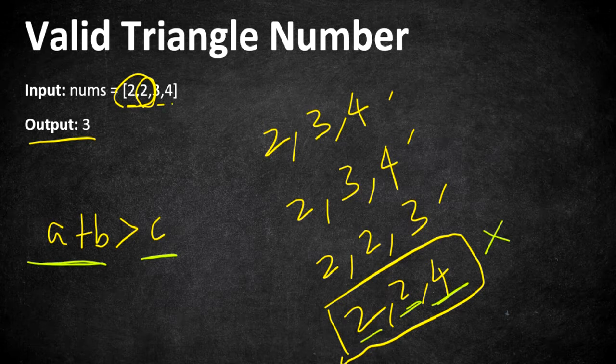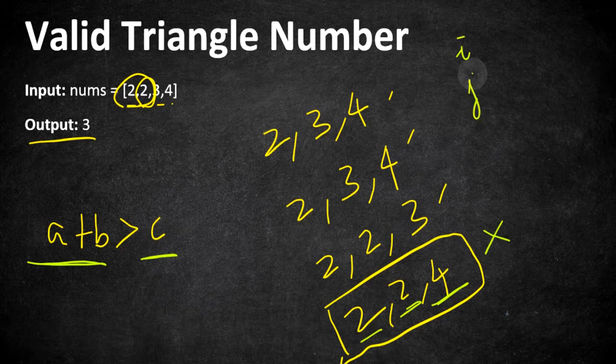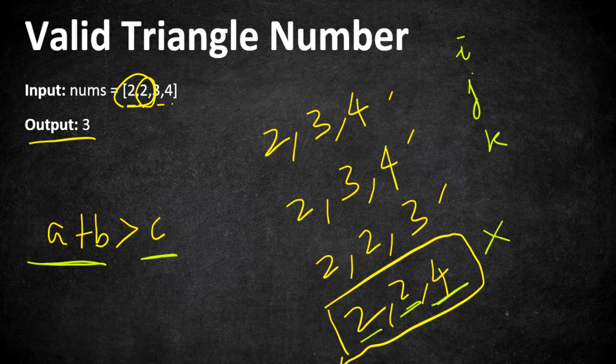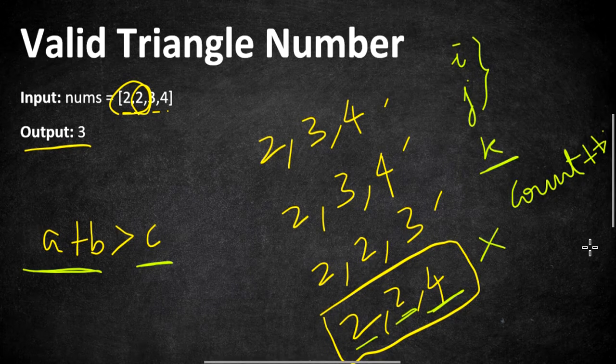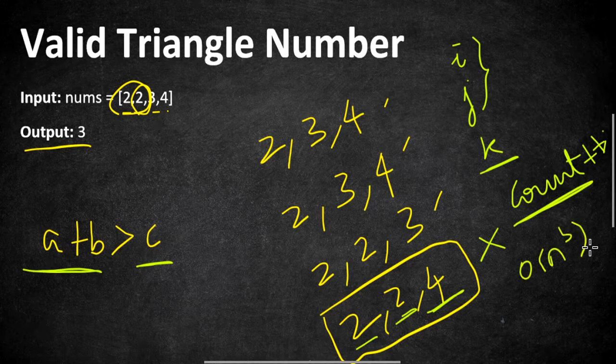If you are trying to approach via brute force, then we can have three for loops where i, j, and k form three pointers, and we iterate every possible triplet in the given integer array and check whether any two sides' sum is greater than the other side. If that satisfies, then we can have a counter that increments every time it finds a new triplet, and that is going to be our output. But this is going to take Big O of n cubed time complexity.